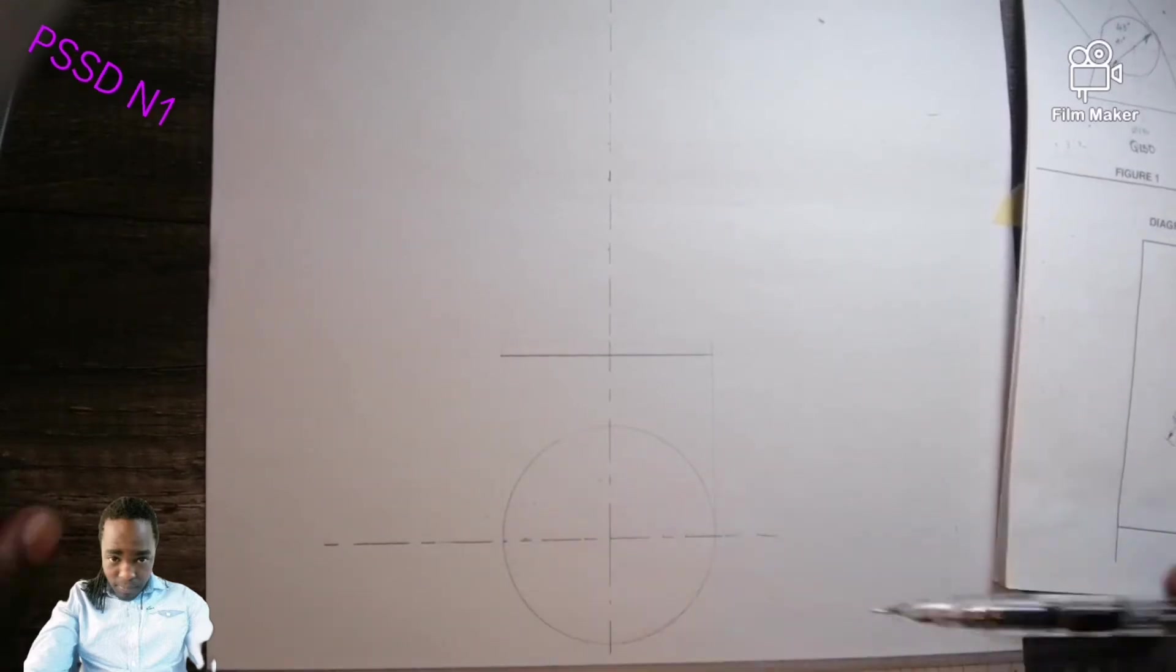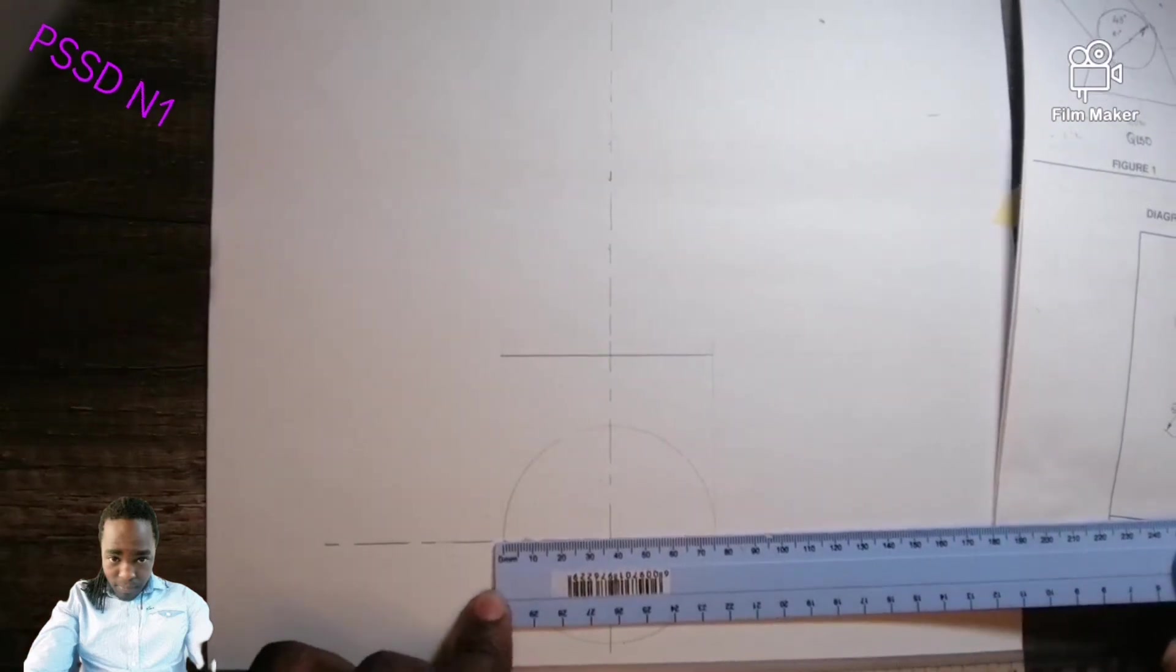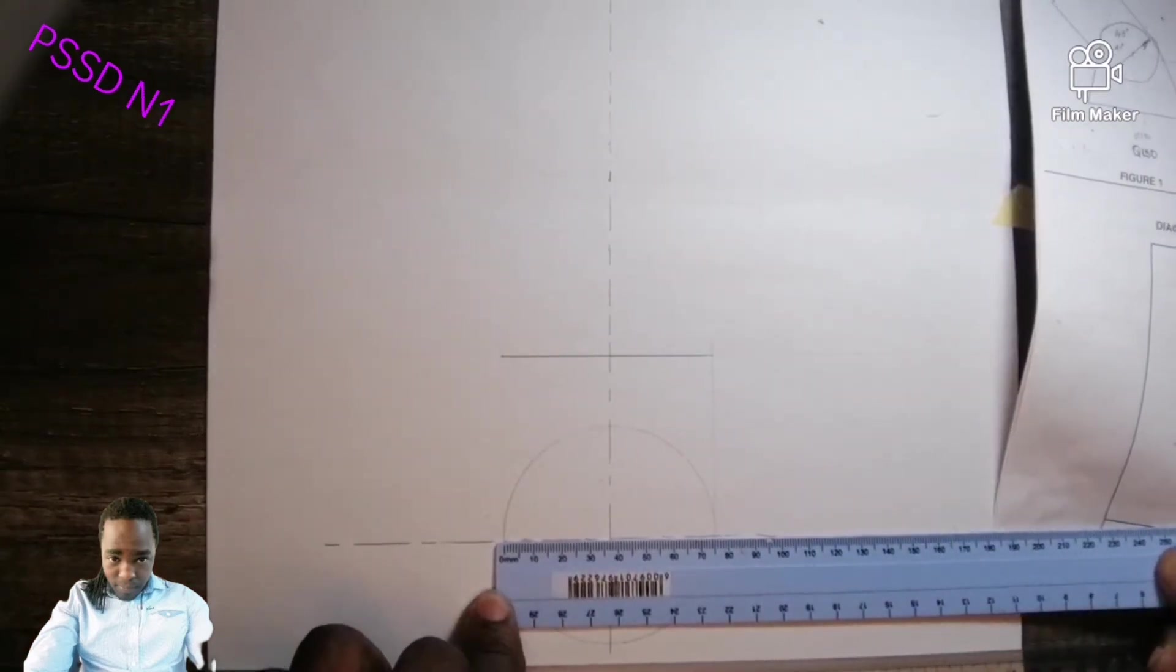This is diameter 75. Double check, this is 75. So from here till here, remember you must observe the protocol or the laws of orthographic projection.